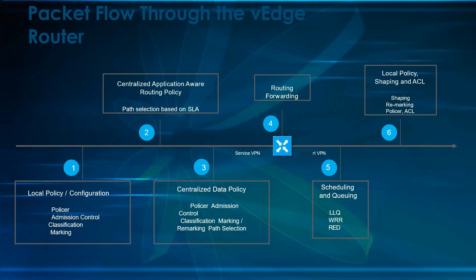For example, if you have done something local to the device, but the admin is doing something on the vSmart that contradicts it, the vSmart configuration would overwrite the local behavior. The vSmart policy is preferred over the local device policies. Then the packet goes into routing and forwarding — once it is in the service VPN, routing is resolved, and it moves to the transport VPN which is VPN 0. Scheduling and queuing happen on the exit interface, and then local policy shaping and ACL shaping, applied on the exit interface, are applied to the packet.